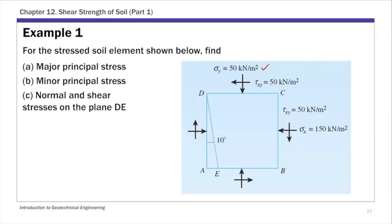We have sigma y, tau xy, sigma x, and tau xy — two sets of stresses on vertical and horizontal planes. We're going to find the major and minor principal stresses, and then the normal and shear stresses on plane dE. This is our plane of interest, and I'm going to use this example to illustrate the pole method.